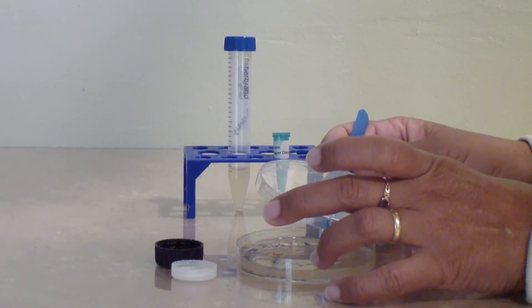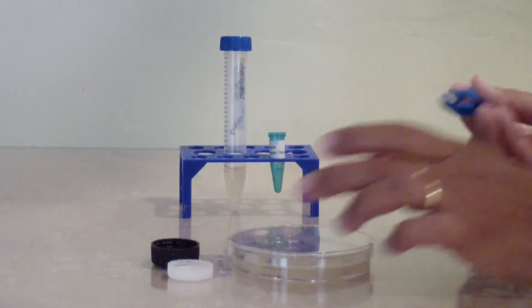Turn the plate over and incubate it in the warmest part of your home until the bacterial lawn is obvious. Usually one day is enough.